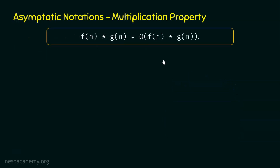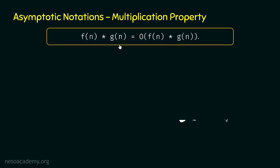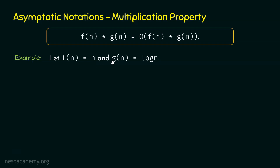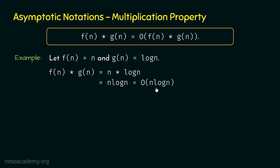Now let's look at the multiplication property. f(n) times g(n) is big O of f(n) times g(n). This property is quite simple to understand. Let's take an example: f(n) is n and g(n) is log n. If we multiply these two functions, we get n times log n, or n log n. f(n) times g(n) is n log n. According to this property, f(n) times g(n) must be big O of f(n) times g(n), and n log n is big O of n log n.